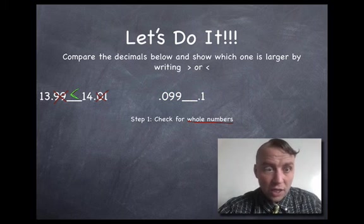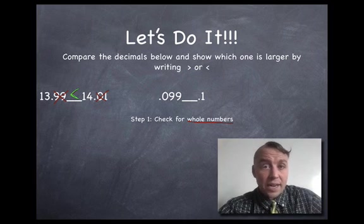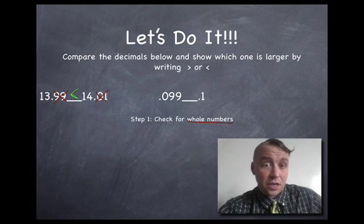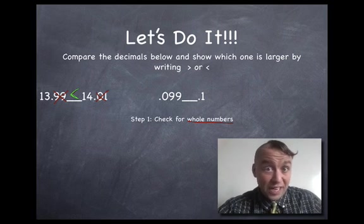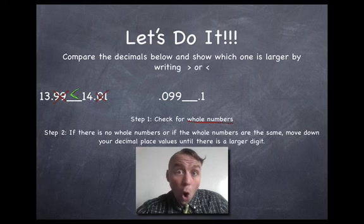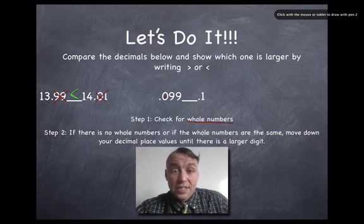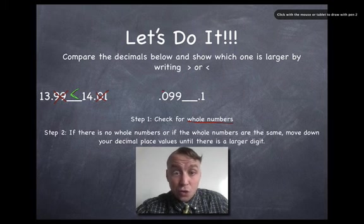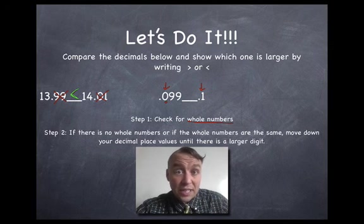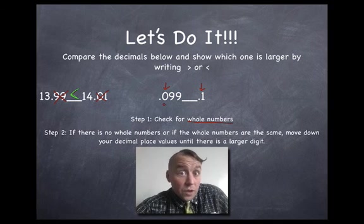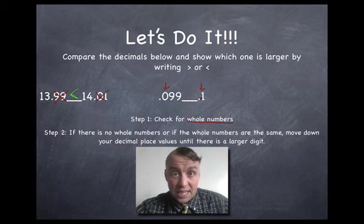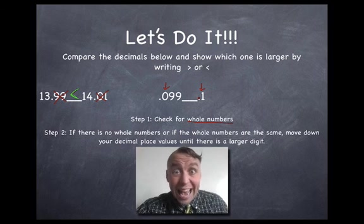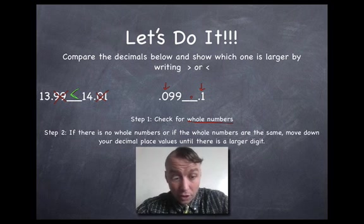Let's go on to the second problem. Notice how I didn't even look at that .01 and that .99. Here's the second problem: .099, or if you know how to read that, 99 thousandths, and 1 tenth is the other problem. So this is where we're gonna get into step two. Assuming that there's no whole numbers, you're gonna look at place values from left to right, starting in the tenths place. You're just gonna look at the tenths place for starters. Are one of those digits bigger? Well, in this number we have a zero in the tenths place and in this number we have a one in the tenths place. Is one of those digits larger? Yes.